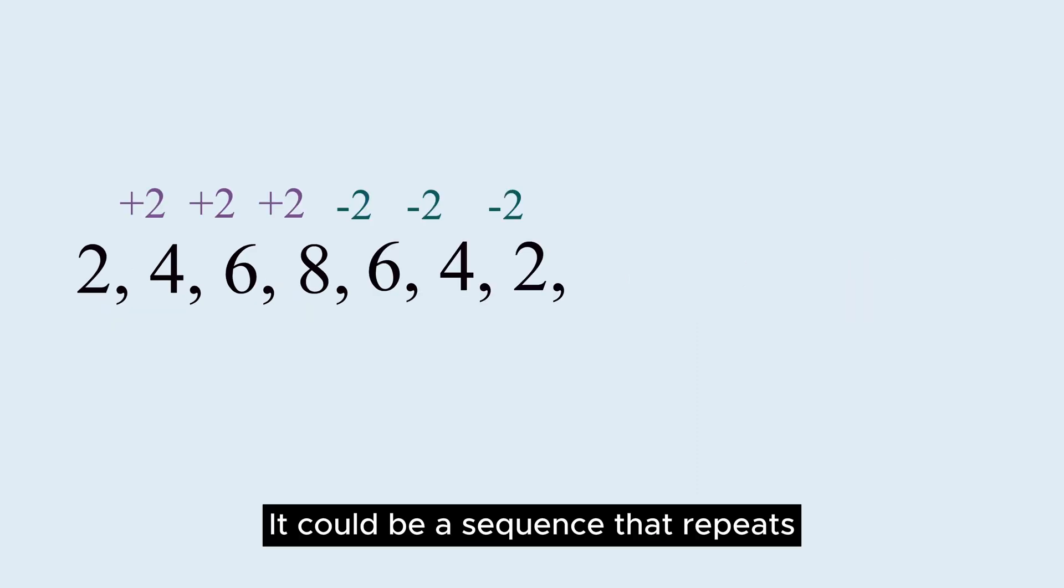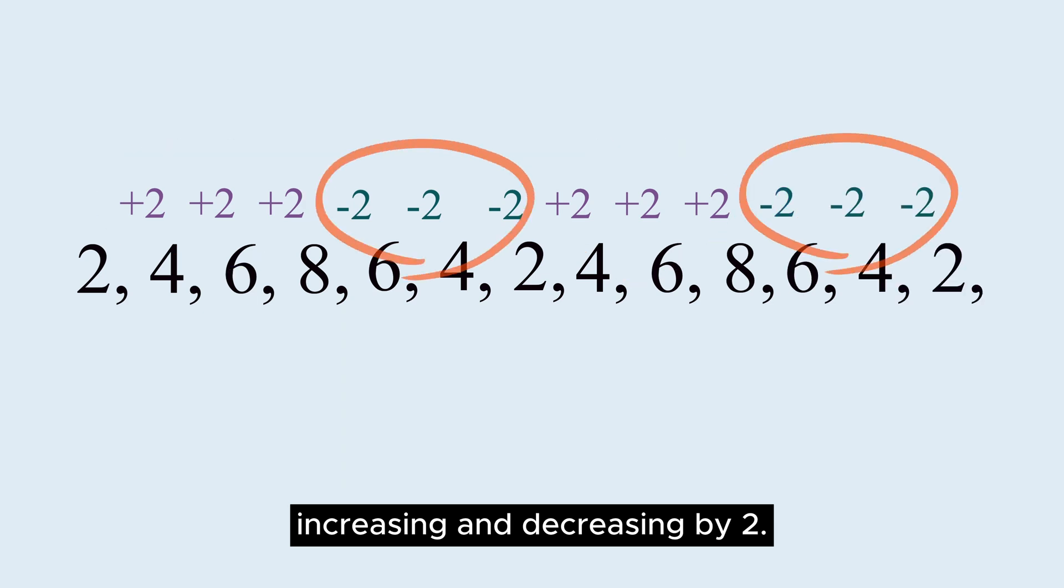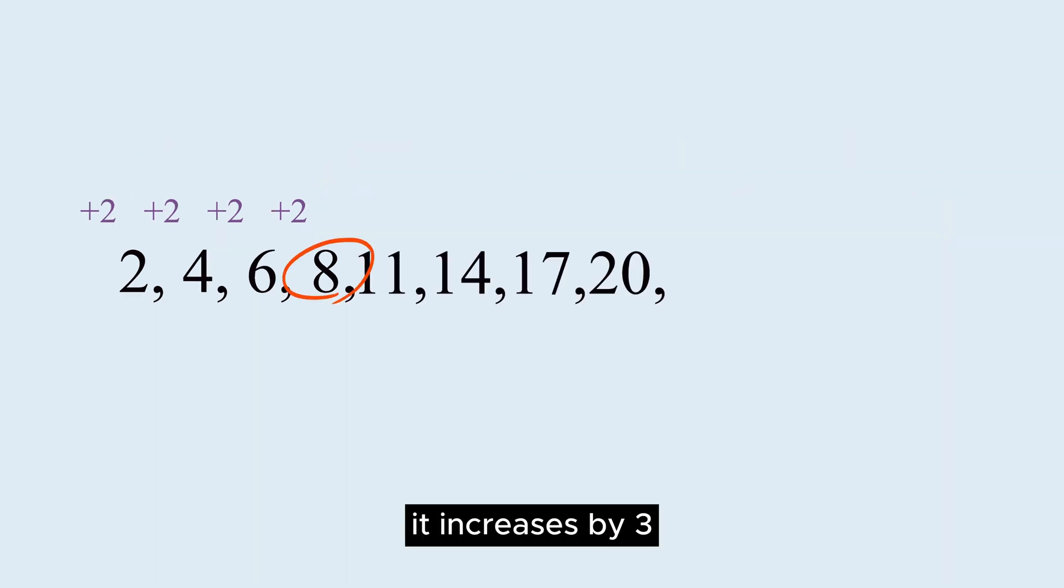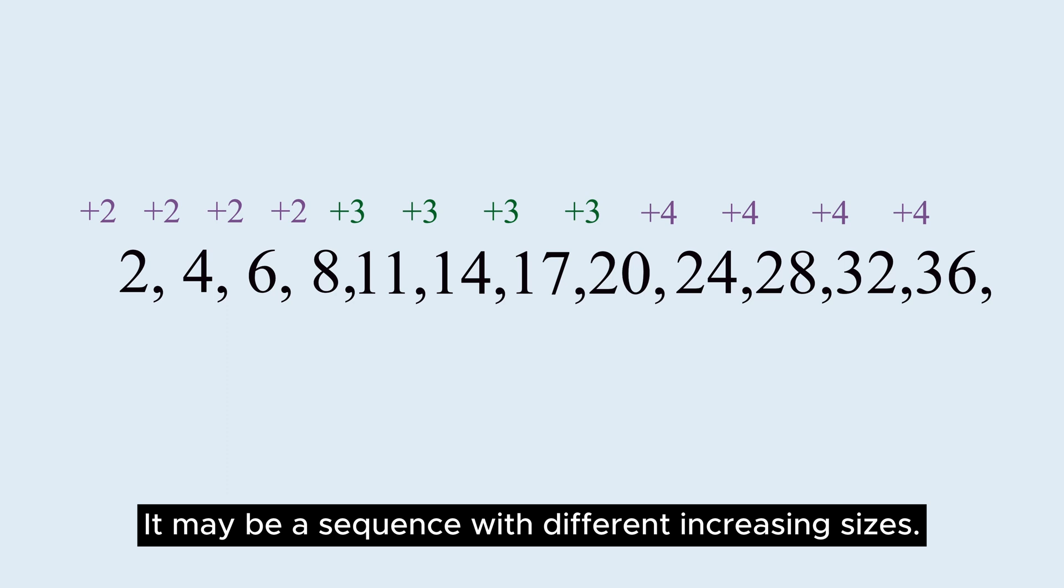It could be a sequence that repeats increasing and decreasing by 2. After 8, it increases by 3, and after 20, it increases by 4. It may be a sequence with different increasing sizes.